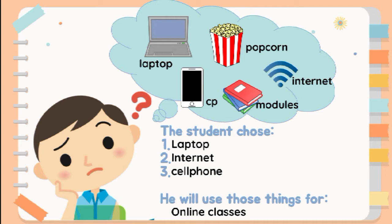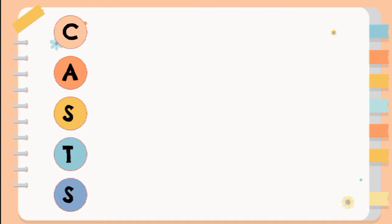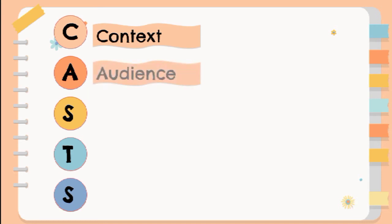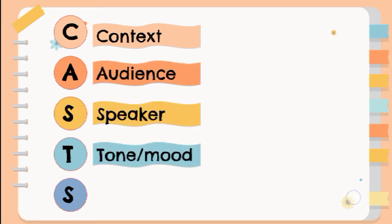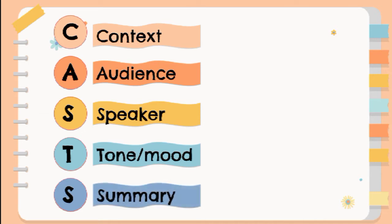In this lesson, you will know more about determining the worth of ideas in a listening text using the CASTS method, which stands for Context, Audience, Speaker, Tone or Mood, and Summary. It will guide you on making inferences about the thoughts and feelings expressed in the text you listen to.